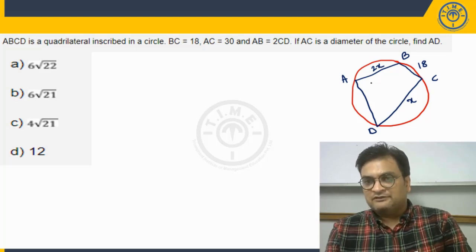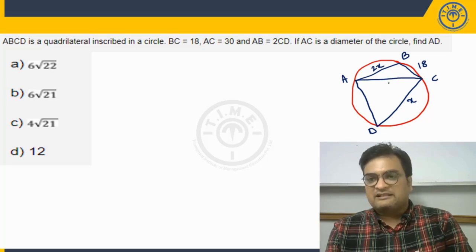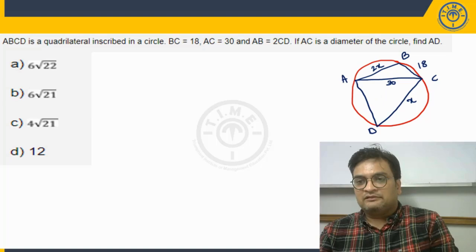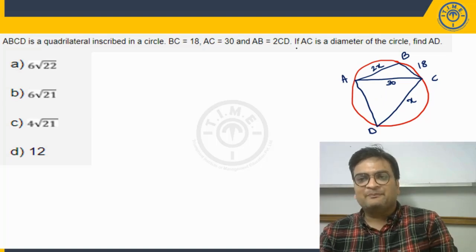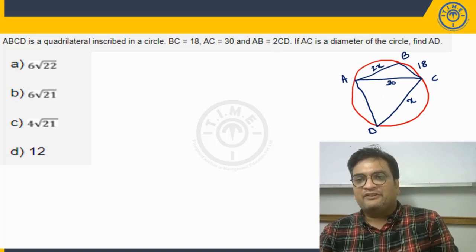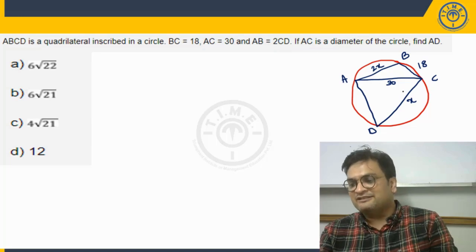AC is also given. AC is 30. Then he also says AC is the diameter of the circle.